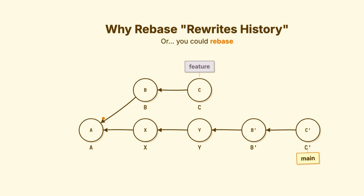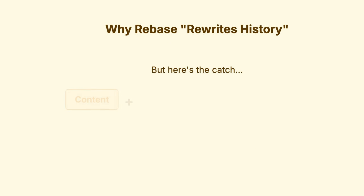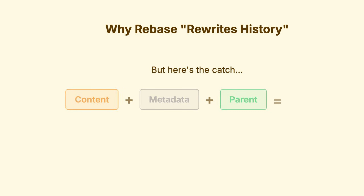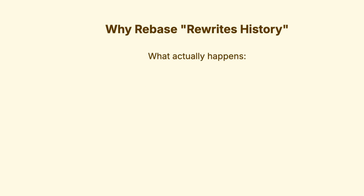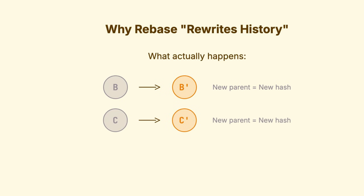Take your commits and replay them on top of the new main. But you must understand this: a commit's identity is its hash. That hash is generated from the content, the metadata, and the parent pointer. Change any of those — including the parent — and you get a completely different hash. A different commit.